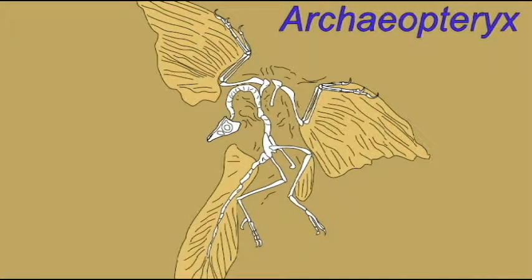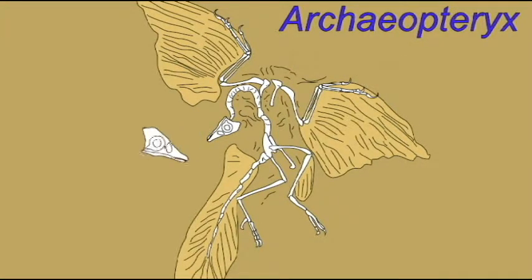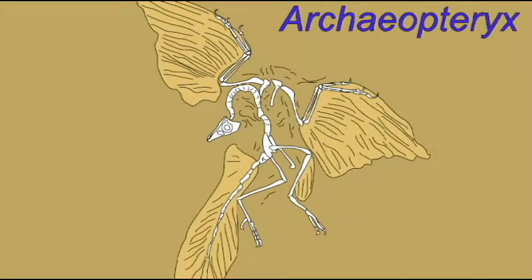While the fossil of Archaeopteryx includes the impressions of feathers and flight feathers, giving rise to its classification as a bird, it nevertheless became clear that its clawed, grasping fingers, its teeth, and many other features were more reptilian. And so this is truly a transitional form.